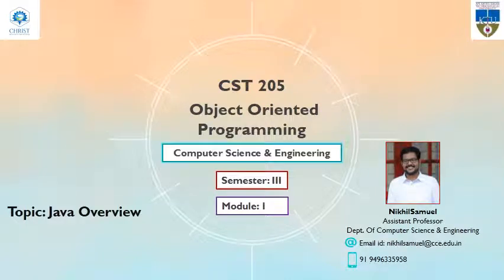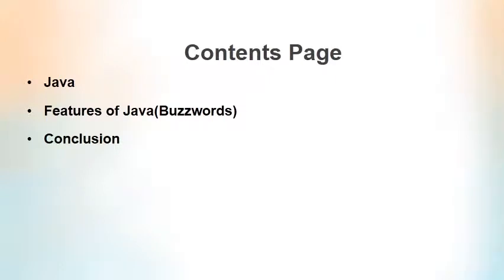Welcome to the video lecture series of object-oriented programming. We will see what Java actually is. So far we discussed about different object-oriented concepts, then unified modeling language and various diagrams. Now it's time to look at Java. We will see what Java means and some of the features of Java, also known as buzzwords, because in university examinations questions may be like 'explain the buzzwords in Java.' Buzzwords and features represent the same thing.